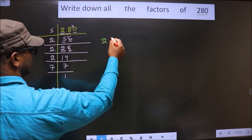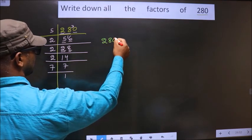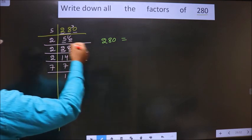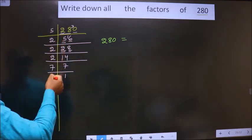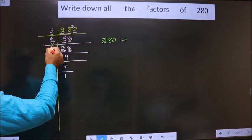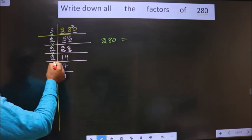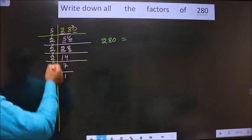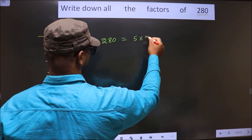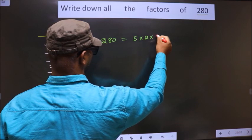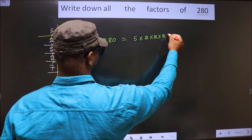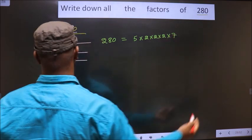So now 280 is equal to the product of these numbers: 5 × 2 × 2 × 2 × 7.